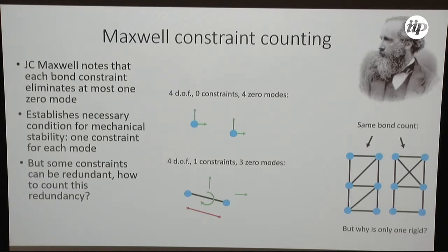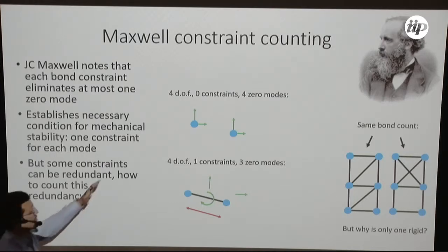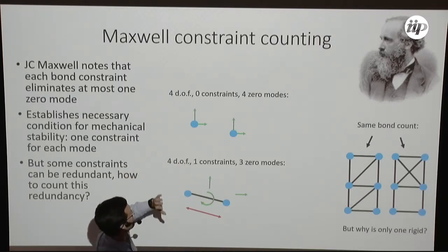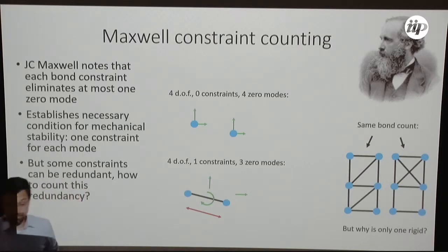The notion of counting up the ways that we can deform such a structure goes back to James Clerk Maxwell in 1864, and he was concerned about making sure that bridges weren't going to fall over, that bridges were stable. The counting just goes like this: I have two particles in two dimensions, that's four degrees of freedom. I add a central force spring between them, and now I have gone from four zero modes to three zero modes. I can translate, translate, rotate, but stretching or compressing is now going to cost energy. It's going to stretch or compress the spring.